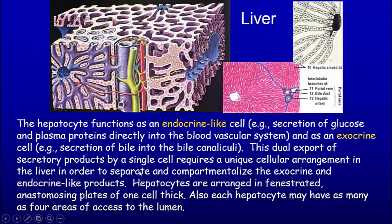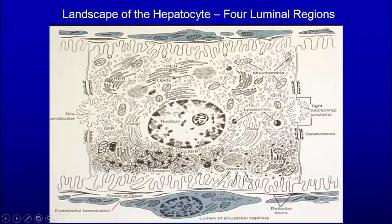Hepatocytes are lined up and the blood is washed on both sides of the hepatocytes going from the portal radical towards the central vein. As a consequence of having both functions, you may have as many as four luminal areas: bile canaliculus here and there, and blood sinuses here and here, with the hepatocyte in the middle. The hepatocyte has a big nucleus, big nucleolus, a lot of euchromatin, smooth endoplasmic reticulum, a lot of Golgi, a fair amount of rough ER for producing proteins, and also lysosomes.